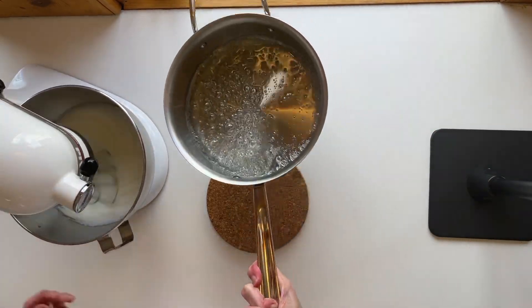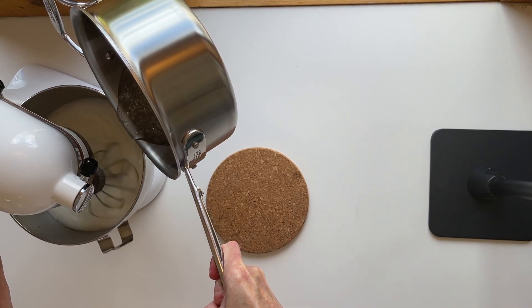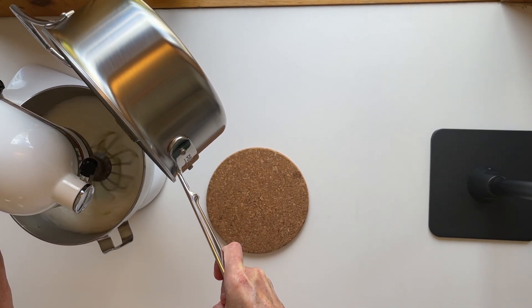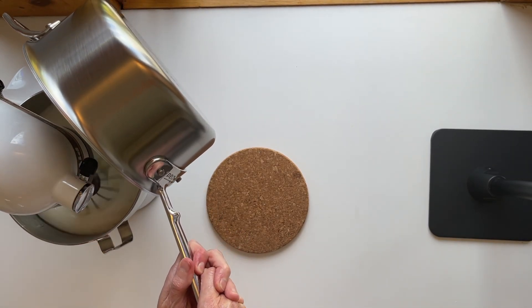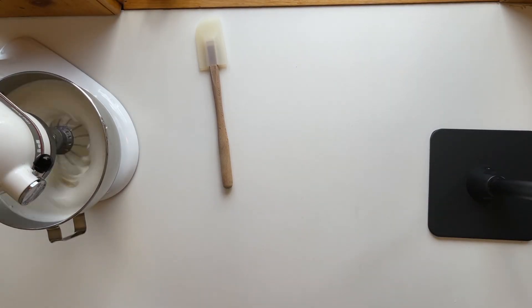Once it gets to 121 Celsius or around 200 degrees Fahrenheit, I'm going to take it off the heat, connect the pot to the bowl. I'm not aiming away from the whip or toward the eggs—I'm pouring it down the side of the bowl.